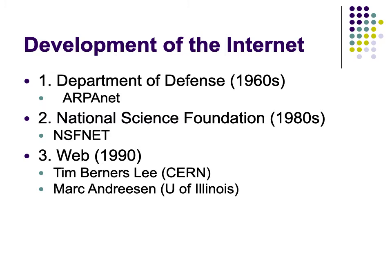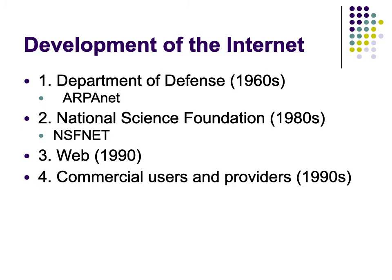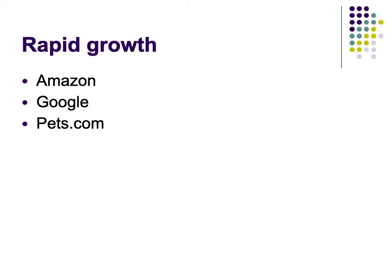The transition to the web we know today really happened in the late 1990s, when the network transitioned to private ownership, and particularly when it opened in the late 90s to commercial users. Once opened for commercial use, there was an explosion of internet companies. So Amazon was founded in 1994, Google founded in 1998, or Pets.com, also founded in 1998.